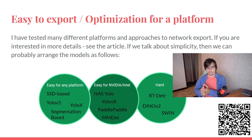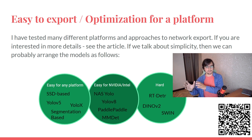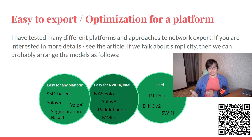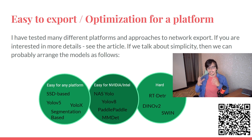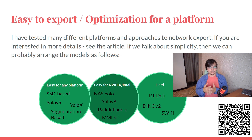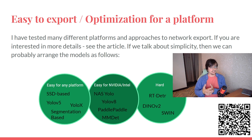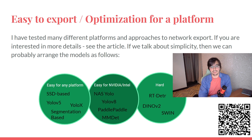I see three groups of networks from an export perspective. The first is easy to export everywhere — either the network is old, like SSD networks, or it's super popular, or it's super simple like YOLOX. The second group already has export code built in, like YOLOv8 or NAS-YOLO, but these usually support only NVIDIA and OpenVINO conversion. The third group is hard to export and lacks a built-in export pipeline — you can usually export them to TensorRT, but sometimes it creates complications. For example, I've heard that RT-DETR is pretty complicated to export.